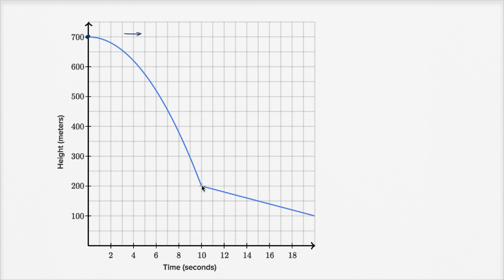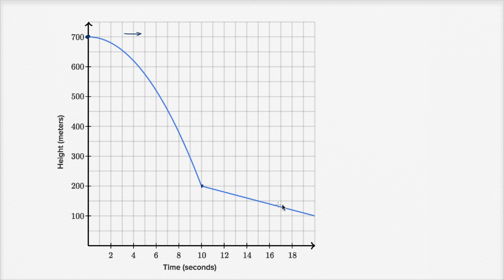Then we can see all of a sudden her rate of decline slows down. She's still declining as we move forward in time, but at a slower rate — or you could say her height is changing at a less negative rate. It's quite a negative rate right over here, but then it becomes a less negative rate right over here. This is when she deploys the parachute. So after 10 seconds she deploys the parachute — she jumps at zero seconds, and at 10 seconds she deploys the parachute.